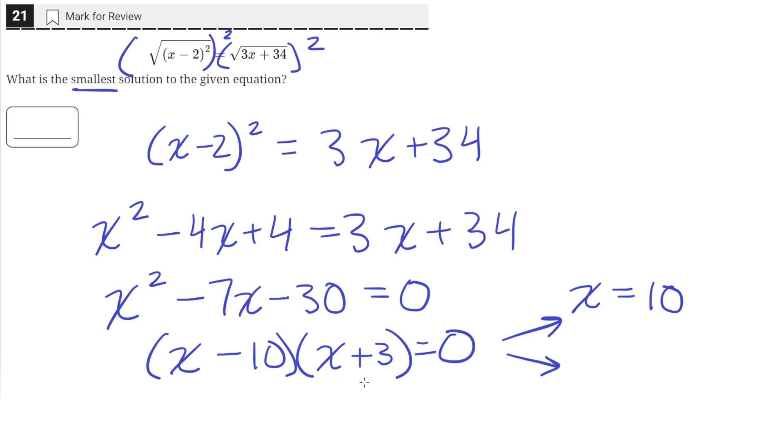And then in the second parentheses here, if x equals negative 3, then negative 3 plus 3 equals 0, so then anything times 0 is just 0. So that satisfies the equation as well. So x equals negative 3 as well.